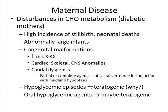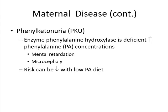Another environmental factor is maternal disease. A diabetic mother has a high incidence of stillbirths, neonatal death, large infants, and congenital malformations — around three to four times higher risk than a normal pregnant woman. It may lead to cardiac, skeletal, and central nervous system anomalies, as well as caudal dysgenesis. Hypoglycemic episodes can also be classified as teratogenic, and oral hypoglycemic agents may be teratogenic. Phenylketonuria (PKU) may lead to mental retardation and microcephaly, and this risk can be lowered by a healthy diet.